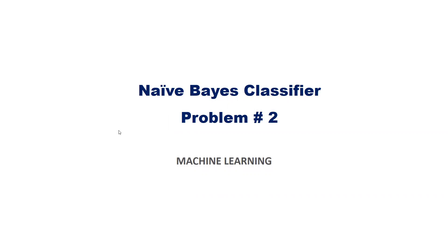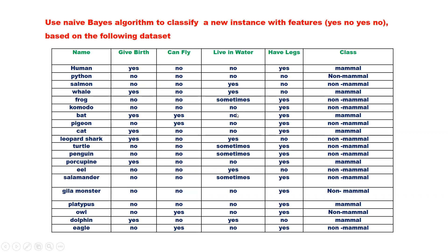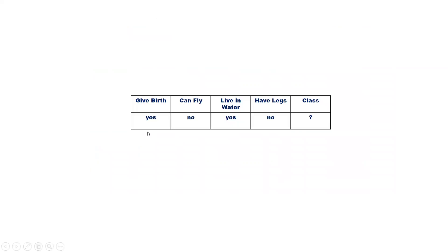In this video, we will discuss how to solve a problem using a Naïve Bayes classifier. We are given a dataset with four features: give birth, can fly, live in water, and have legs. There are two class labels — mammal or non-mammal — and we have to classify animals into one of these classes using the Naïve Bayes algorithm to classify a new record.